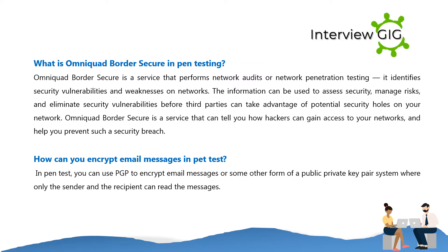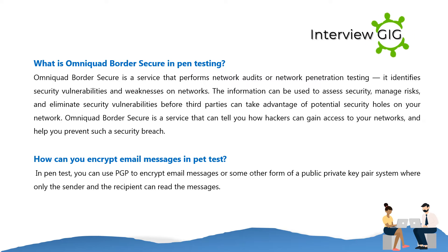OmniQuad Border Secure is a service that performs network audits or network penetration testing. It identifies security vulnerabilities and weaknesses on networks. The information can be used to assess security, manage risks, and eliminate security vulnerabilities before third parties can take advantage of potential security holes on your network. OmniQuad Border Secure can tell you how hackers can gain access to your networks and help you prevent such a security breach.